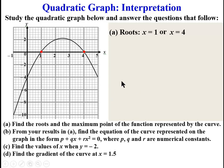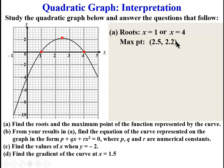So now we look at the maximum point. The maximum point is also known as the turning point. At this point, we find the coordinates. The X coordinate is 2.5. The Y coordinate is 2.2 — it's halfway between the line at 2 and the next line, and each line here is 0.4, so it's in the middle giving us 2.2. So the maximum point is (2.5, 2.2).